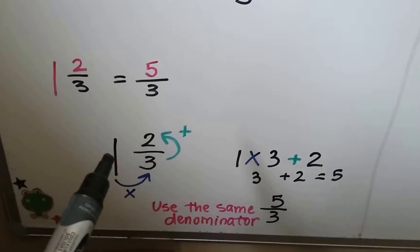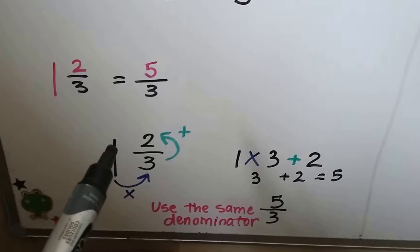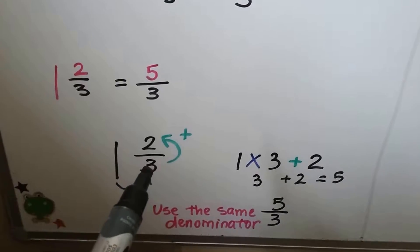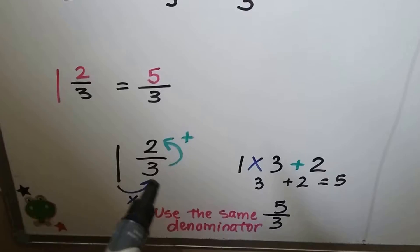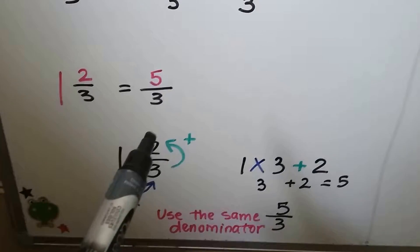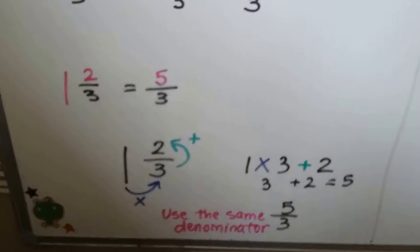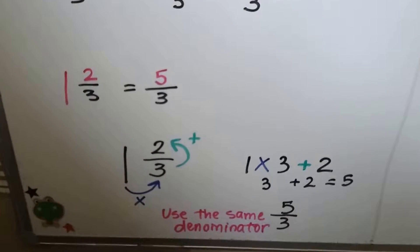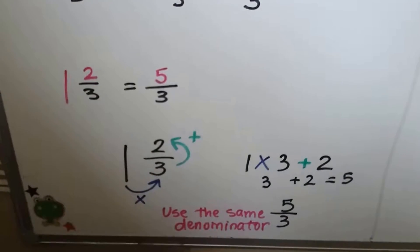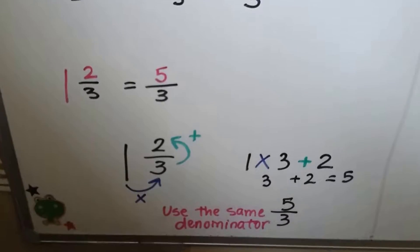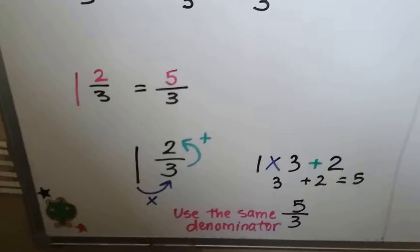What we did was, for the 1 and 2 thirds, we took this big 1 and we multiplied it by the denominator. 1 times 3 is 3. We added the 2. 3 plus 2 is 5, and we used that denominator and it got us 5 thirds. 1 times 3 plus 2 is 5, and we used the denominator that's already there. So we have 5 thirds.